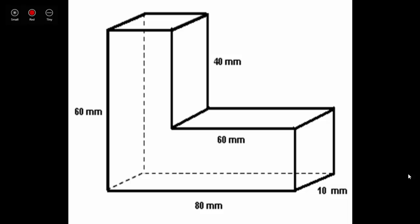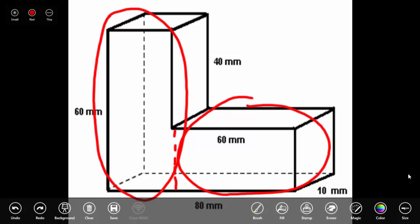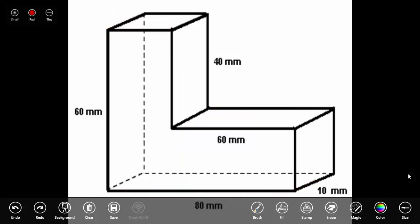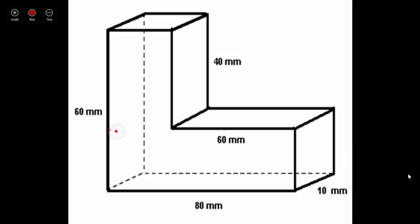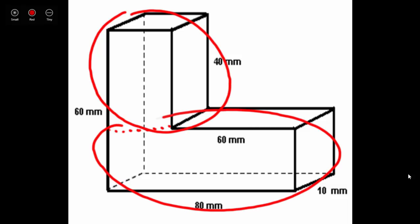Right away, we can see a couple of easy spots to separate this figure. You could separate this figure here, giving you one rectangular prism there and one rectangular prism here. Another way you could do it is to separate this figure here, so you have one rectangular prism here and one rectangular prism here.